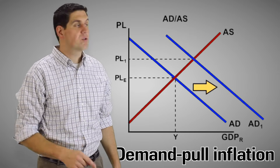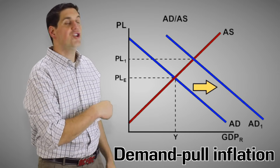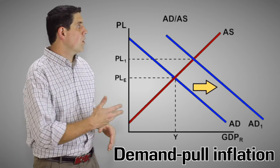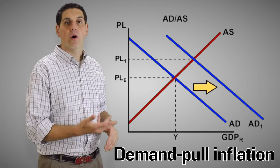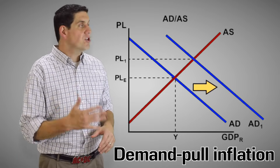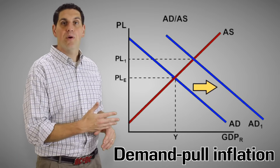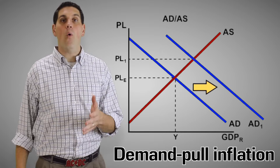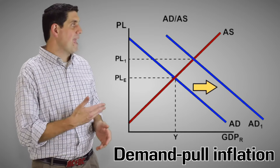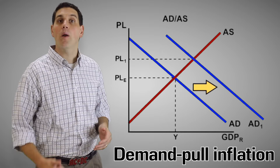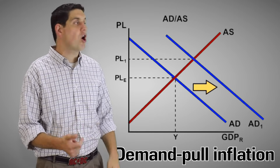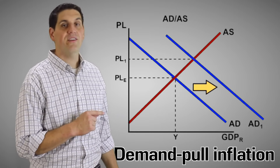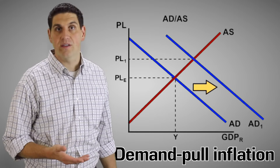Demand-pull inflation is when the aggregate demand shifts to the right, causing the price level to go up. This is the idea that people are buying more and more goods, but since there's only so many goods produced it's going to increase the price of those goods. If more people want something and they can't get it, they're going to start bidding up the price causing inflation. This is the idea of too much money chasing too few goods.